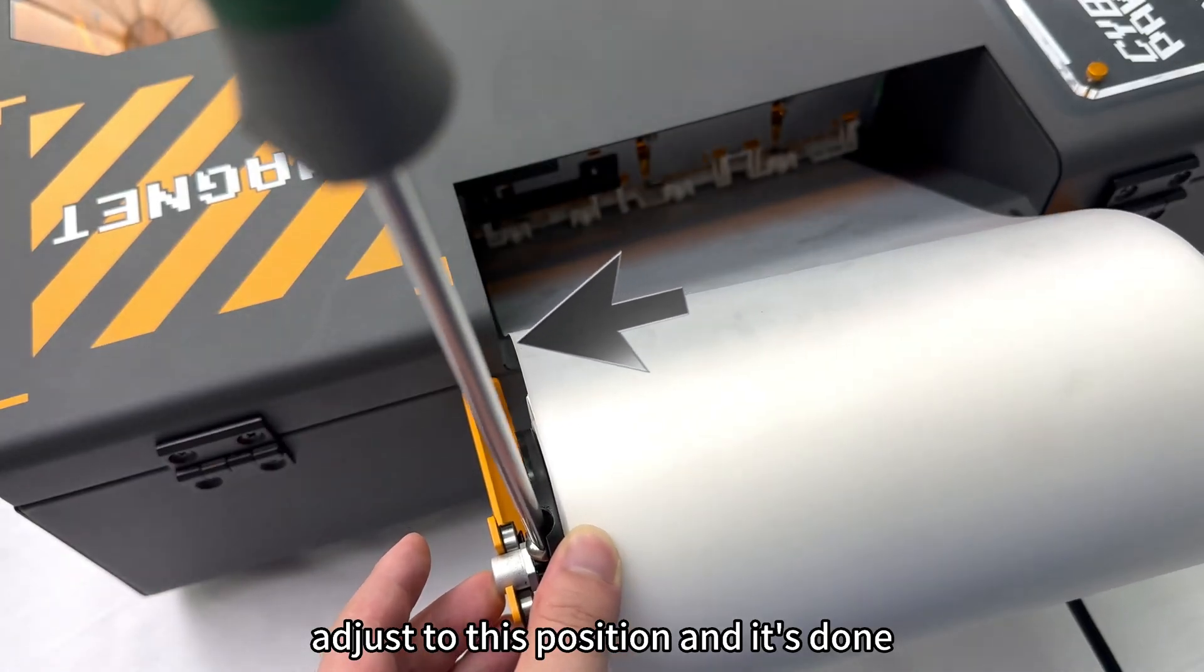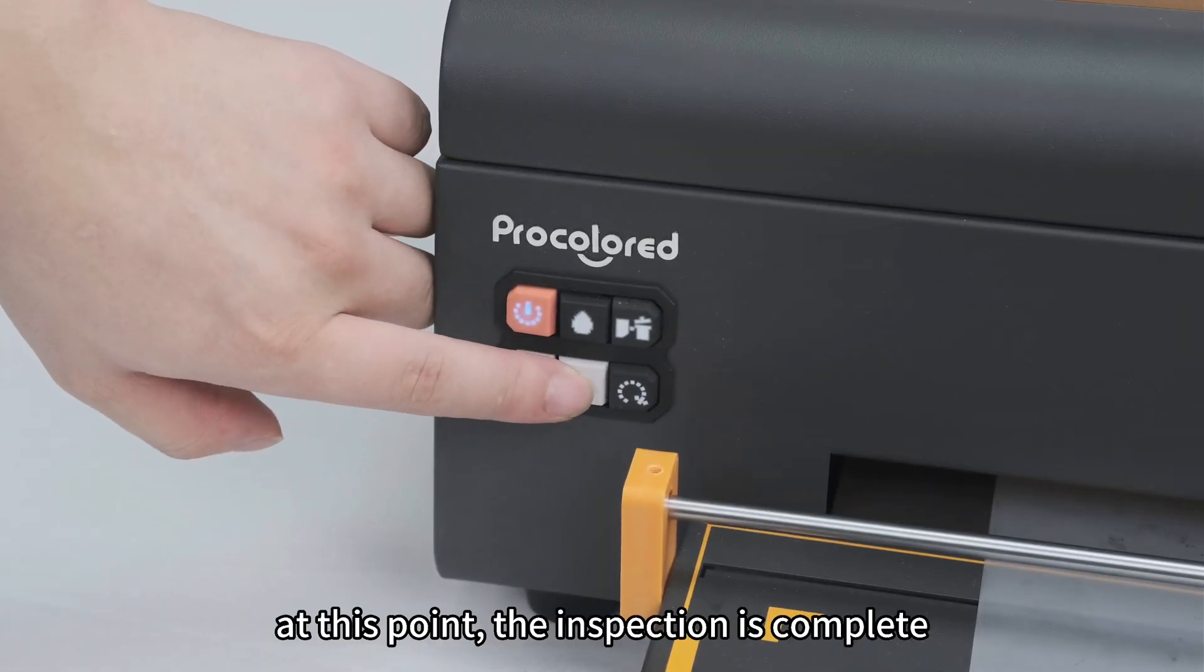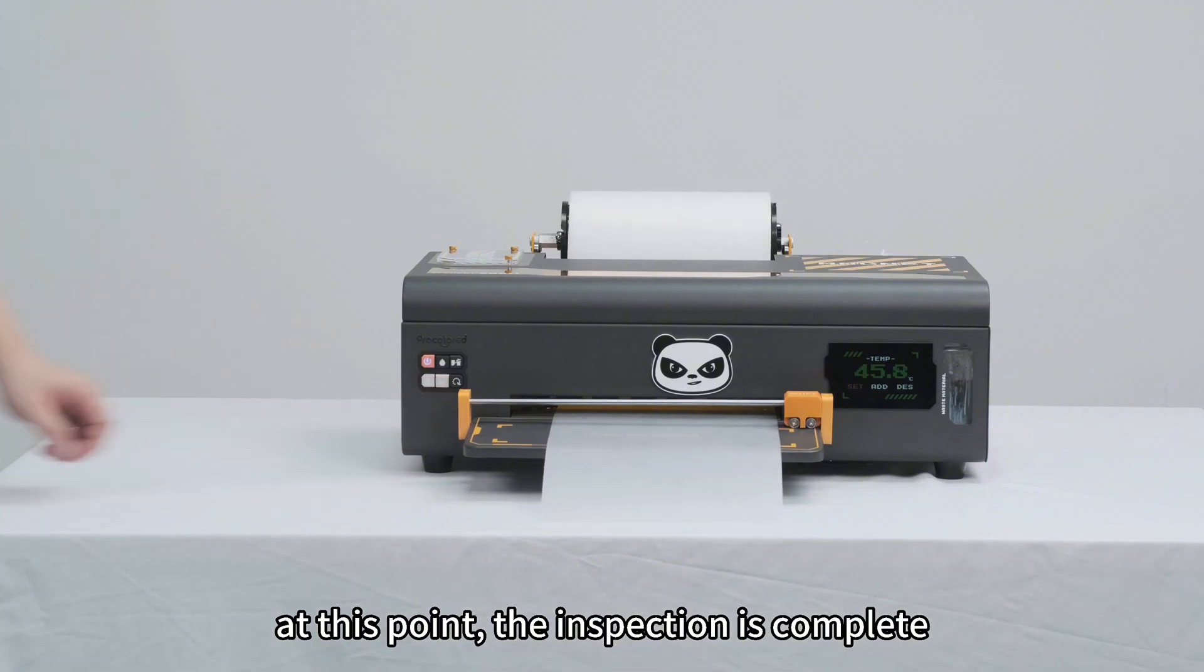Adjust to this position and it's done. Click the button to move the film paper onto the platform. At this point, the inspection is complete.